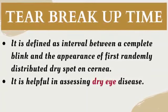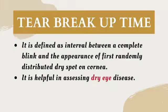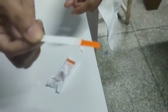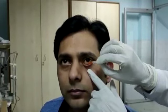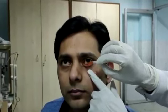Before performing this test, we have already explained to the patient about this procedure. First of all, unwrap the fluorescein strip. Make sure not to touch the orange tip. We will put one drop of normal saline on this strip. Then this fluorescein strip is instilled into the inferior fornix of the patient.